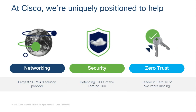At Cisco, we've been around quite a while and we've done networking quite a while. A lot of people don't realize this, but we've been in the security business quite a while as well — to the tune of 100% of Fortune 100 companies having some Cisco security component. As far as software-defined WAN goes, we are the largest service provider for SD-WAN. And in the last couple of years with our acquisition of Duo, we are the leader in Zero Trust. With these technologies and this infrastructure as a background, we're able, in our opinion, to provide the strongest SASE solution.